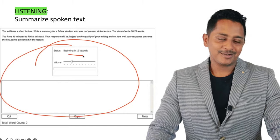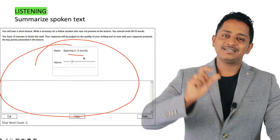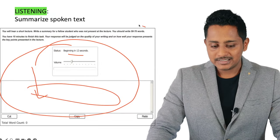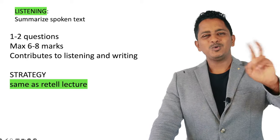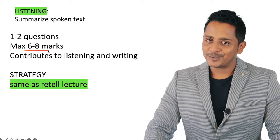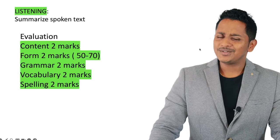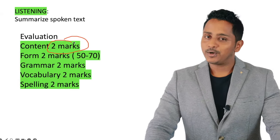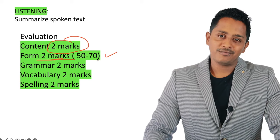Now Summarize Spoken Text — it comes in the listening section but contributes marks to both listening and writing, because you listen and then write. The format is similar: audio begins after a short countdown. Follow the same technique as Retell Lecture — write phrases, listen then write, not simultaneously. You'll have four to five phrases, then use a template to write a grammatically correct sentence of 50 to 70 words. I recommend 65 words or more but under 70 for a better score.